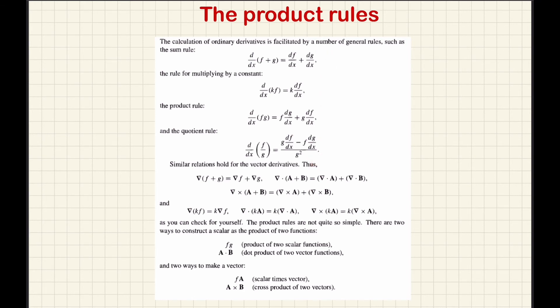The del operator behaves similarly. Del of f and g is distributive. Del dot (a + b) equals del dot a plus del dot b. Del cross (a + b) equals del cross a plus del cross b. That is the distributive property. Multiplying by a constant scalar function applies to gradient and divergence.